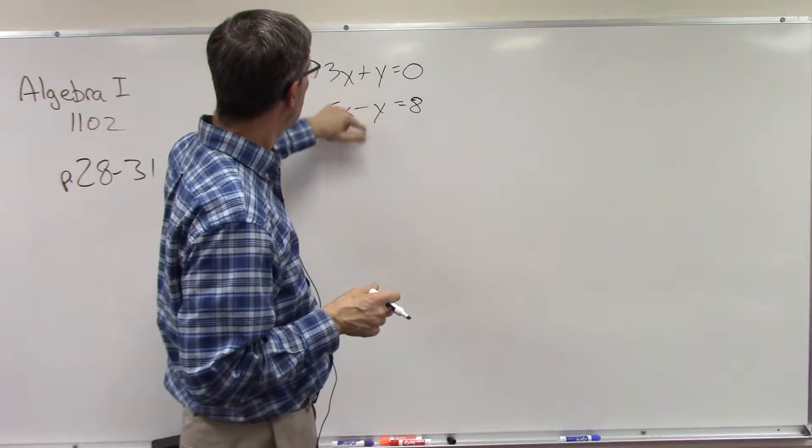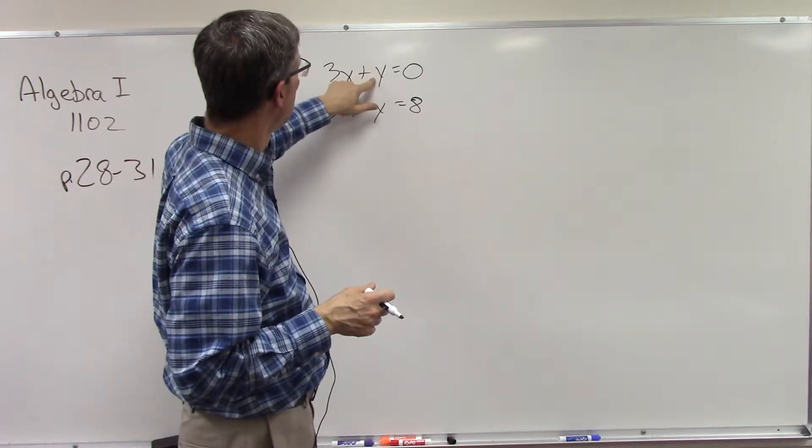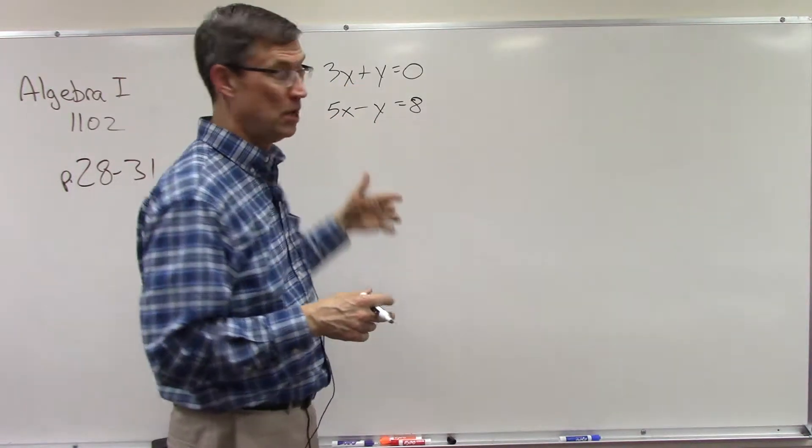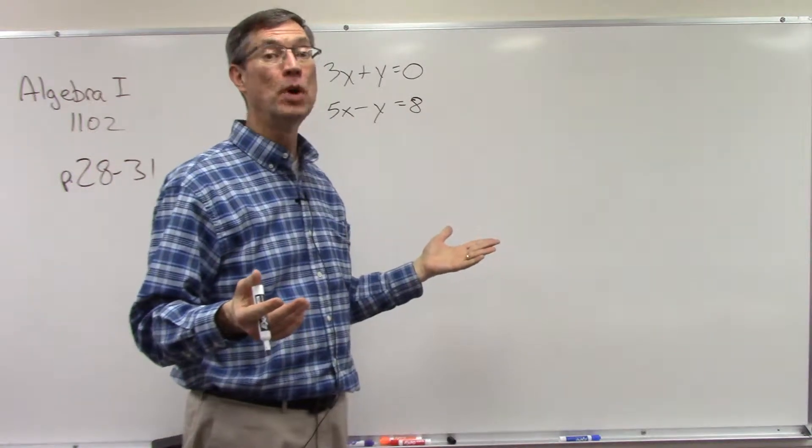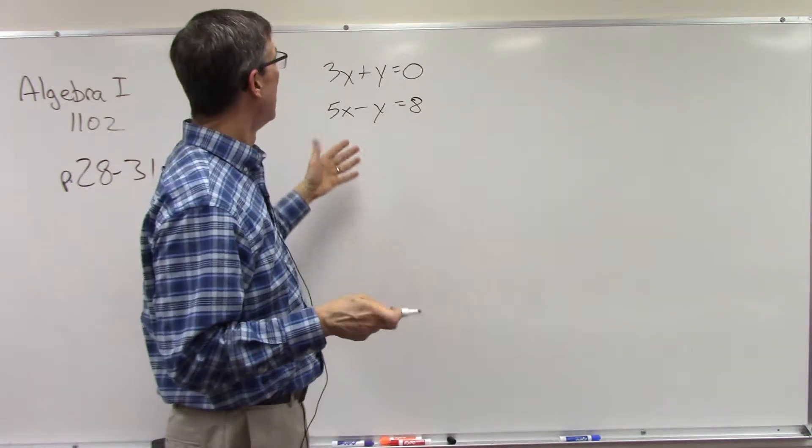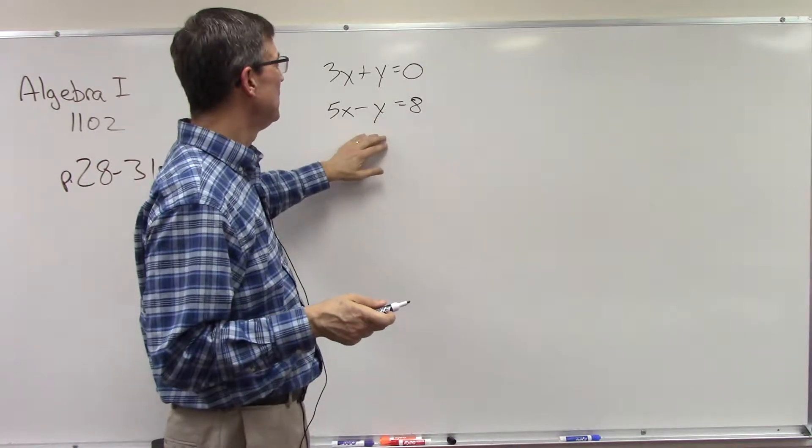Both of these have a situation like that. This one has just y by itself, this one is negative y. We could actually choose either one. This would be the easier one, so let me choose the hard one and just show you what we have to do to be careful.